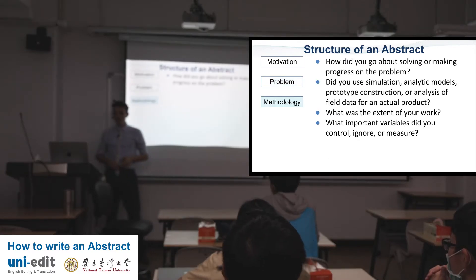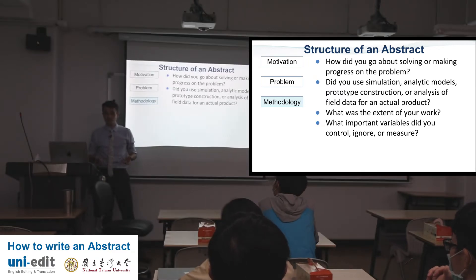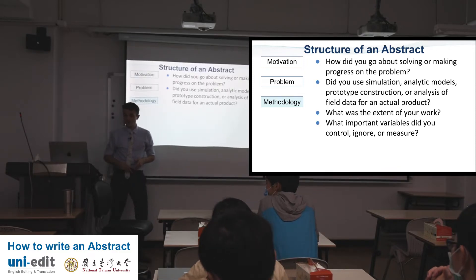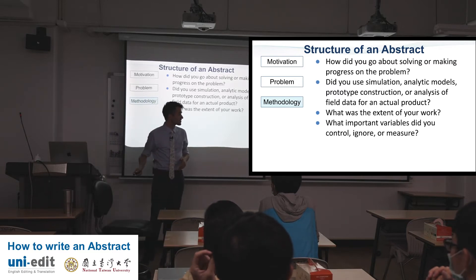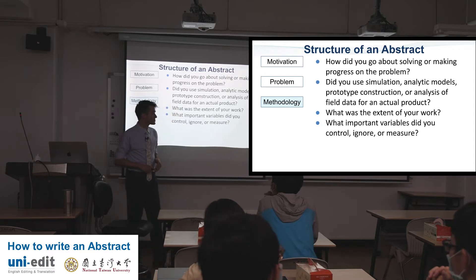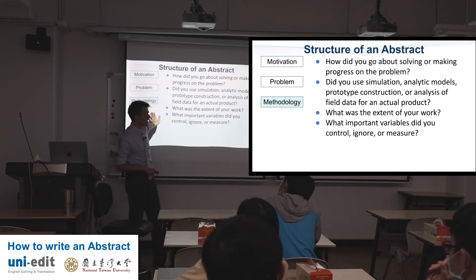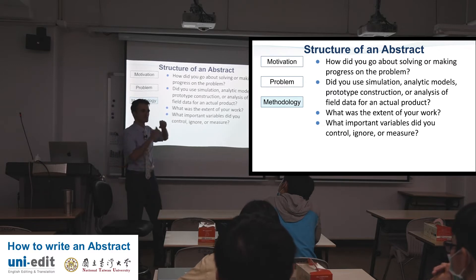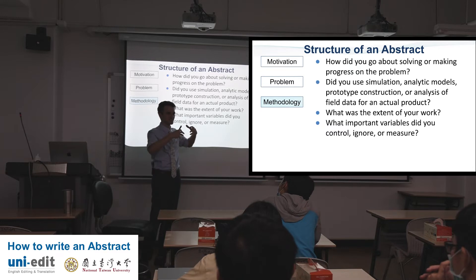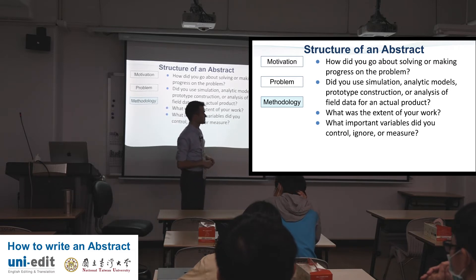Methodology: how did you go about solving or making progress on the problem? Did you use a simulation, analytic models, prototype construction, or analysis of field data for an actual product? What is the extent of your work? What important variables did you control, ignore, or measure? I find that people struggle a lot with the methodology in the abstract, because when you write your methodology it's really specific language and you're trying to describe a really big idea — how did you get your results? And to put that into one or two sentences is challenging.